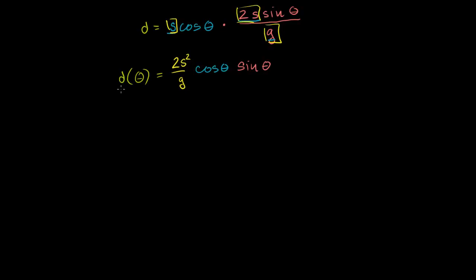Now that we have distance explicitly as a function of the angle that we're shooting the object at, we can use a little bit of calculus to figure out the optimal angle — the angle that's going to optimize our distance. Since we only care about angles from 0 degrees to 90 degrees, let's constrain ourselves: theta is going to be greater than or equal to 0, and less than or equal to 90.